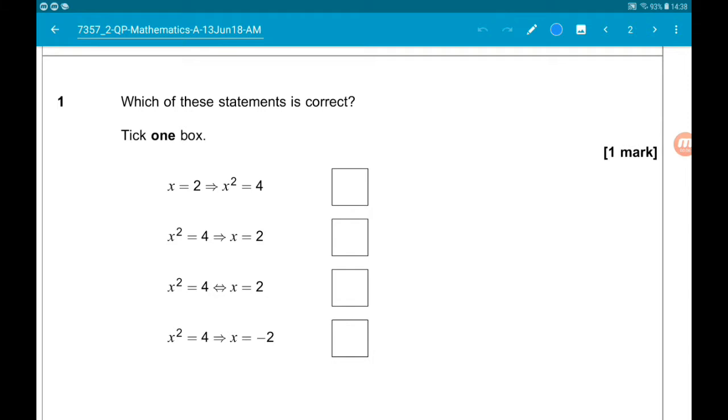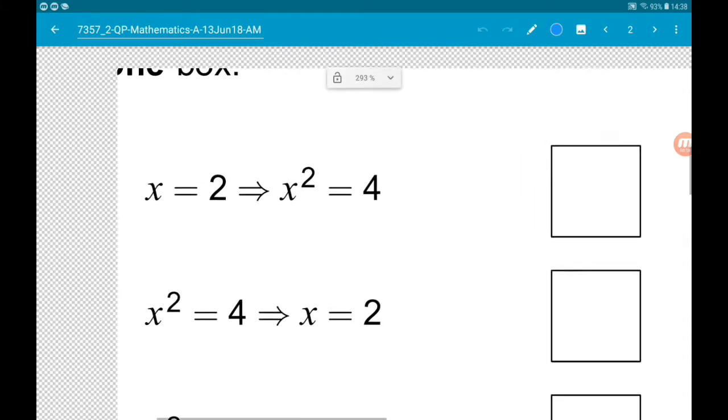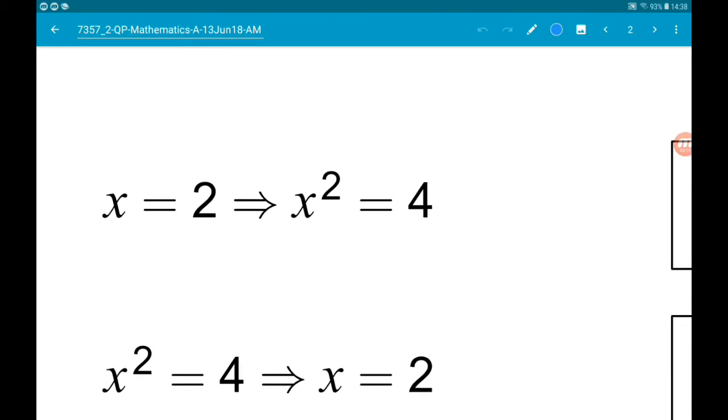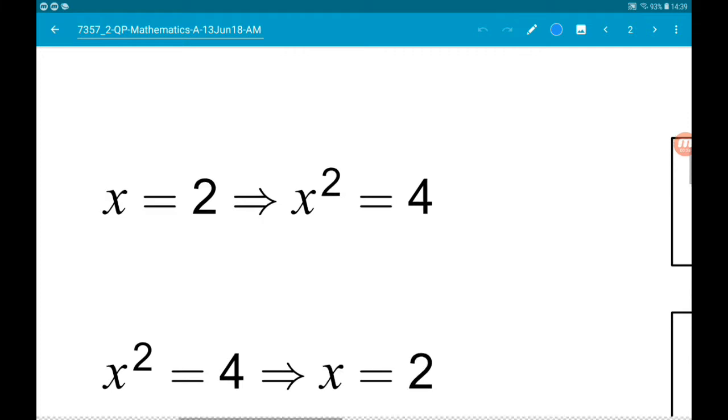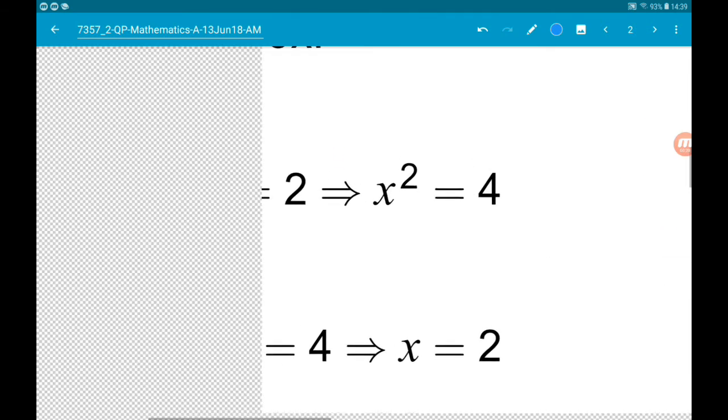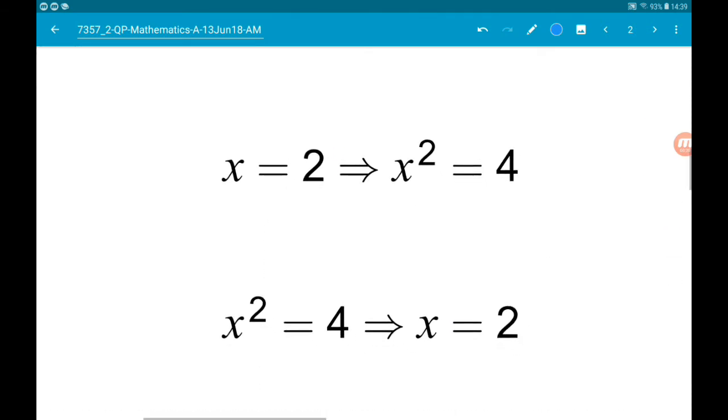This first one is saying that if x is equal to 2, then x squared has to be equal to 4. Now that is actually the answer. That is true. If x is 2, there is nothing else x squared can be except 4.